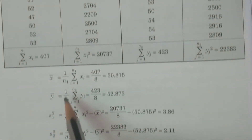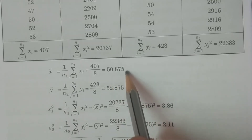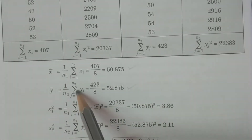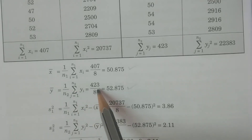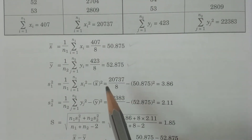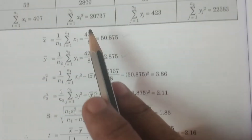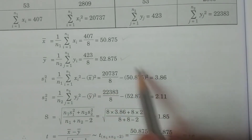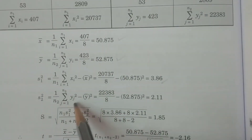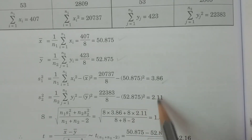Calculate x̄ = (1/n1) × Σxi = Σxi / 8. We get x̄ = 50.875. Similarly, ȳ = (1/n2) × Σyj = 423 / 8 = 52.875. Then s1² = (1/n1) × Σxi² − x̄² = 20,737/8 − (50.875)² = 3.86. Similarly s2² = (1/n2) × Σyj² − ȳ² = 22,383/8 − (52.875)² = 2.11.